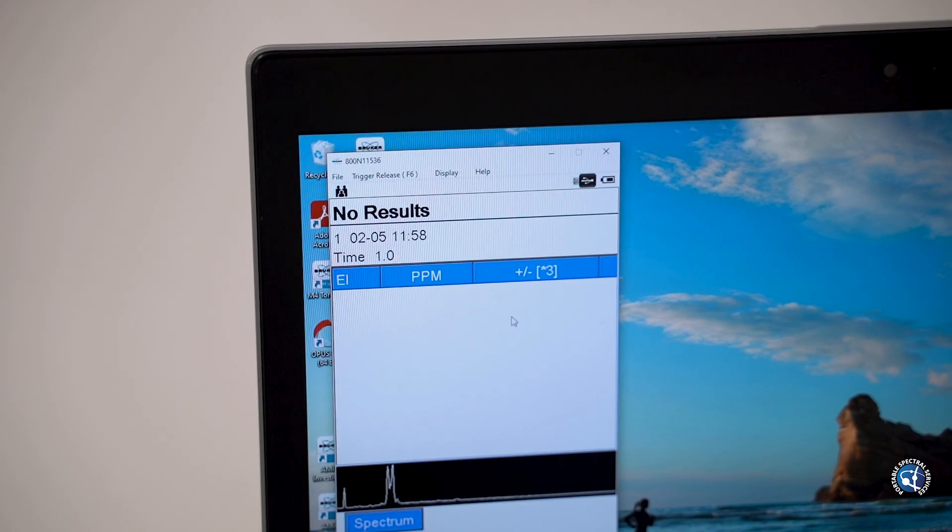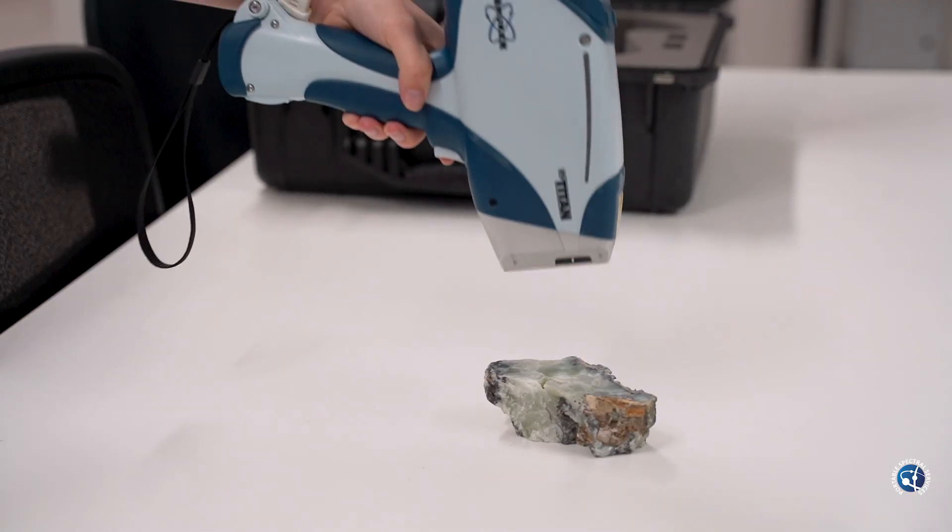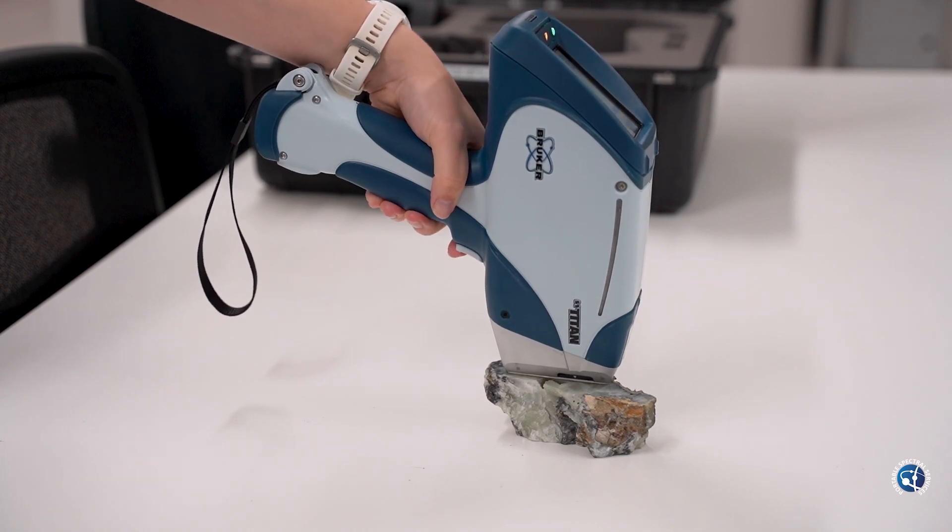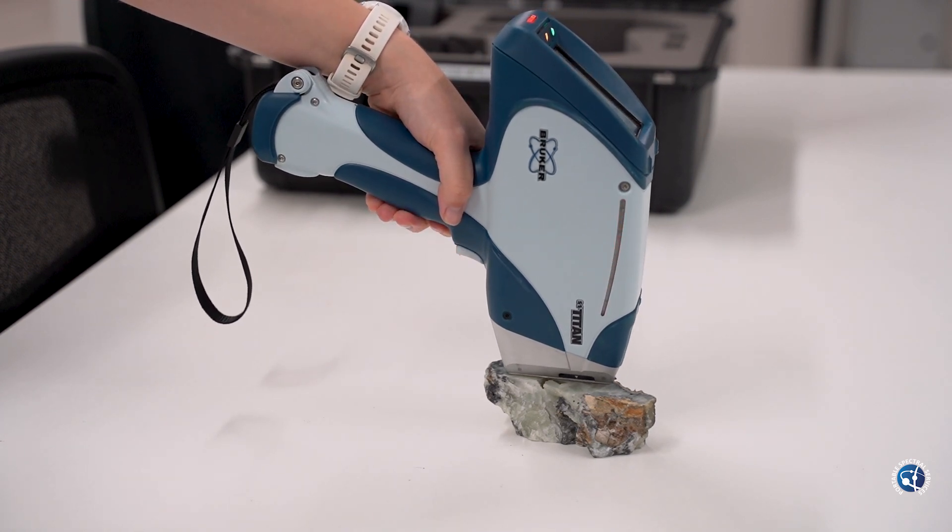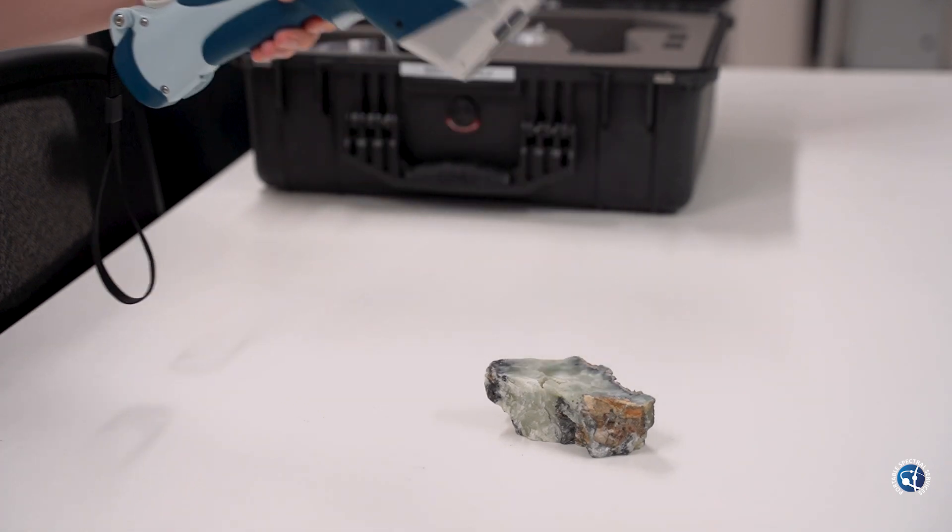Most calibrations require 60 seconds minimum total scan time. Dependent on the calibration, this is divided over each beam phrase. It is recommended to analyze for the full recommended time and if you are unsure of this, please contact Portable Spectral Services for clarification.